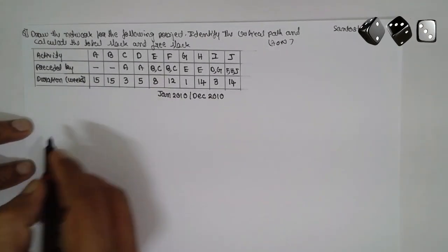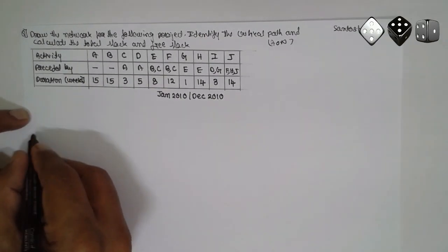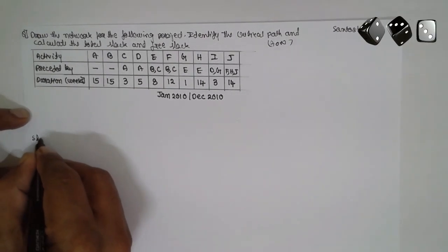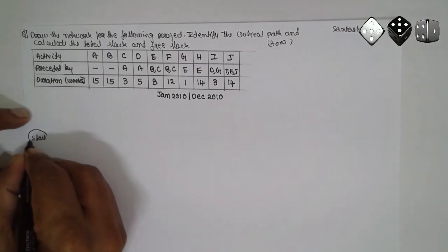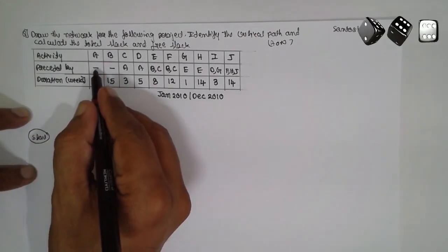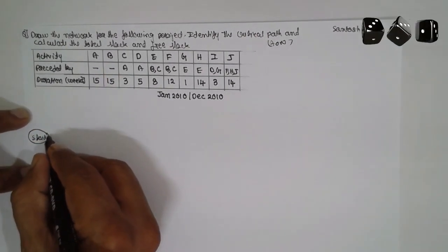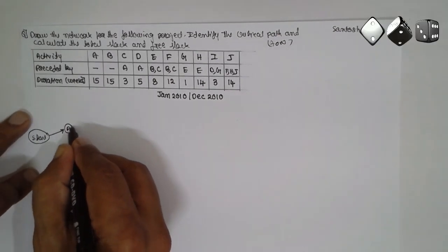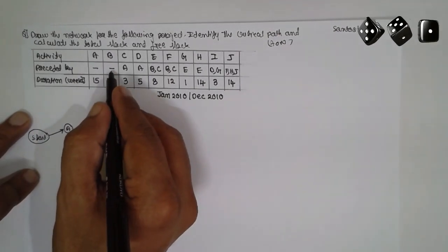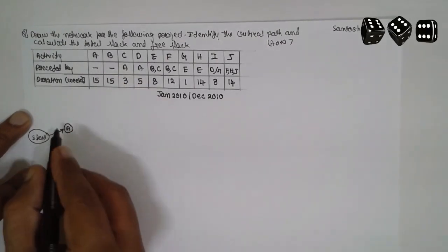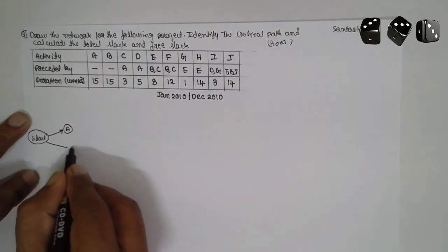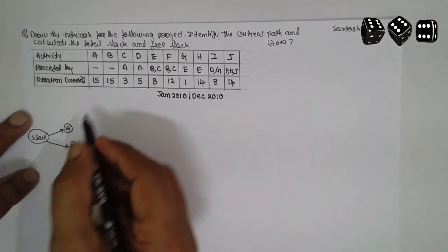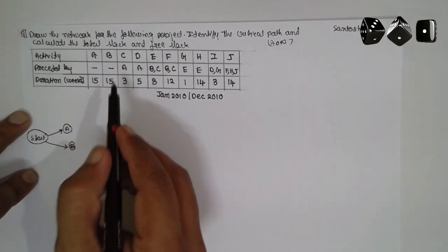This dash indicates start. First I will write start here and round it off. At the end of start, A is there. At the end of A, C is there.